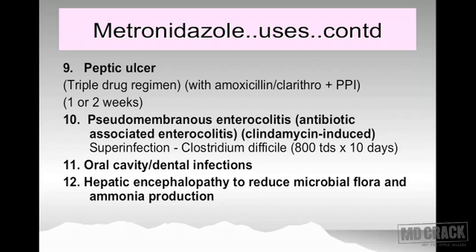Do you remember another drug that acts locally on intestinal microorganisms to produce the same effect as metronidazole? It was neomycin — an aminoglycoside not systemically absorbed when given orally, producing only a local effect. So in hepatic encephalopathy, to reduce intestinal microflora, you have two choices: neomycin and metronidazole. Those were the uses and indications of metronidazole.